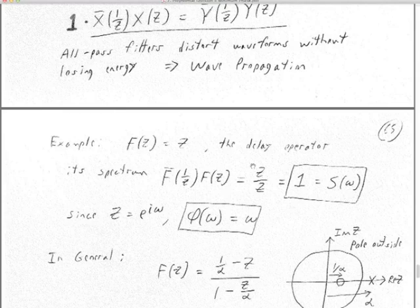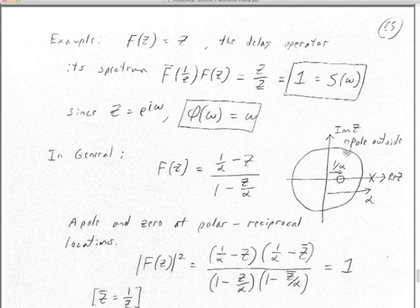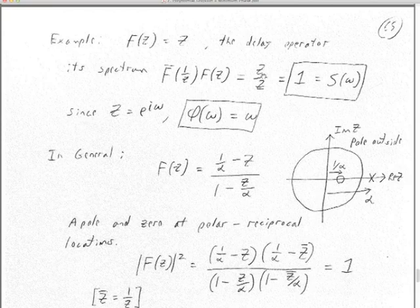All-pass filters are useful because you can distort the waveform without losing energy. Wave propagation codes are all-pass filters because they spread energy around, reflect it, and let energy pass through calculation boundaries without removing or adding any energy. Another all-pass filter is a wave-shaping filter that would convert, say, an air-gun wavelet in seismic exploration to a zero-phase wavelet — the centered pulse that is easy to interpret, where the strongest center pulse indicates where the reflector is located.